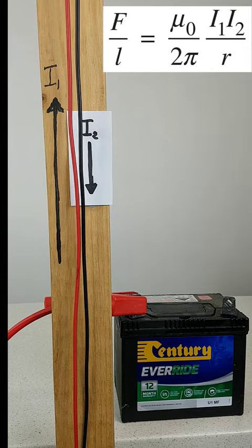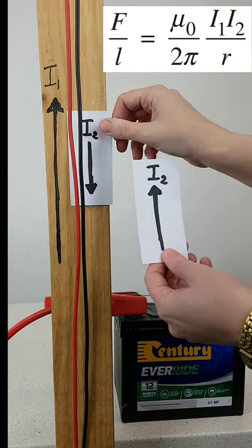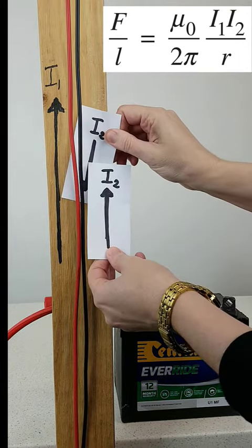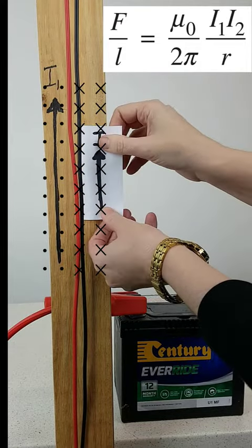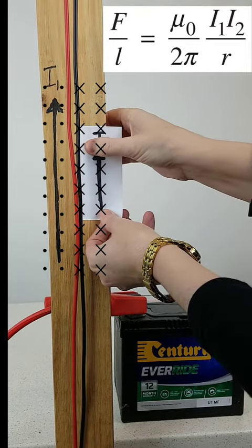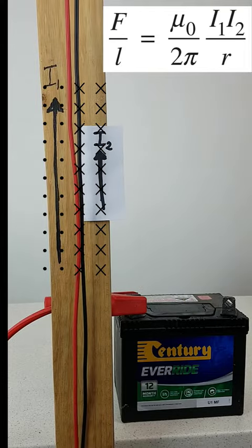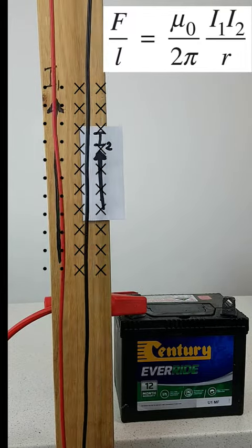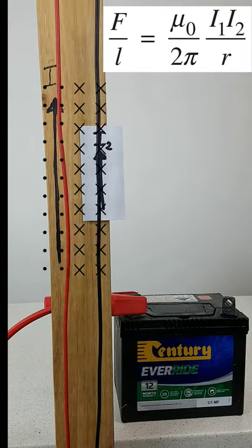When the direction of the current on the right is reversed, so that it carries a parallel current, then there is an upwards current flowing into a magnetic field that is still into the page. By the right-hand rule, the force is in the opposite direction and the two wires attract each other.